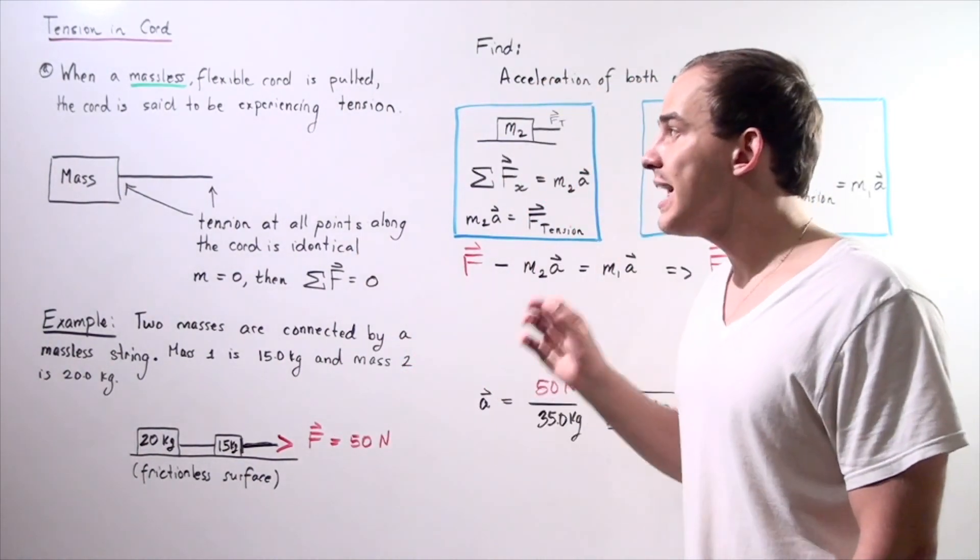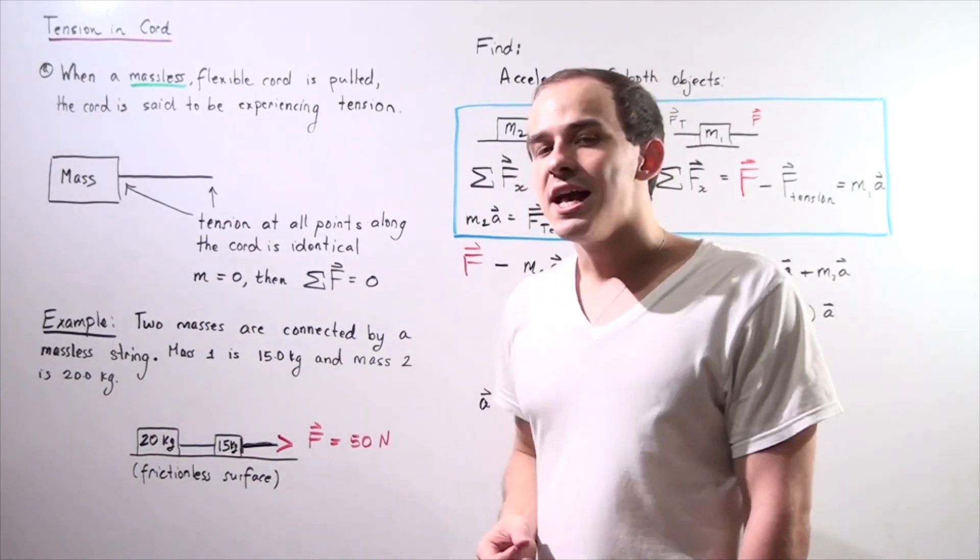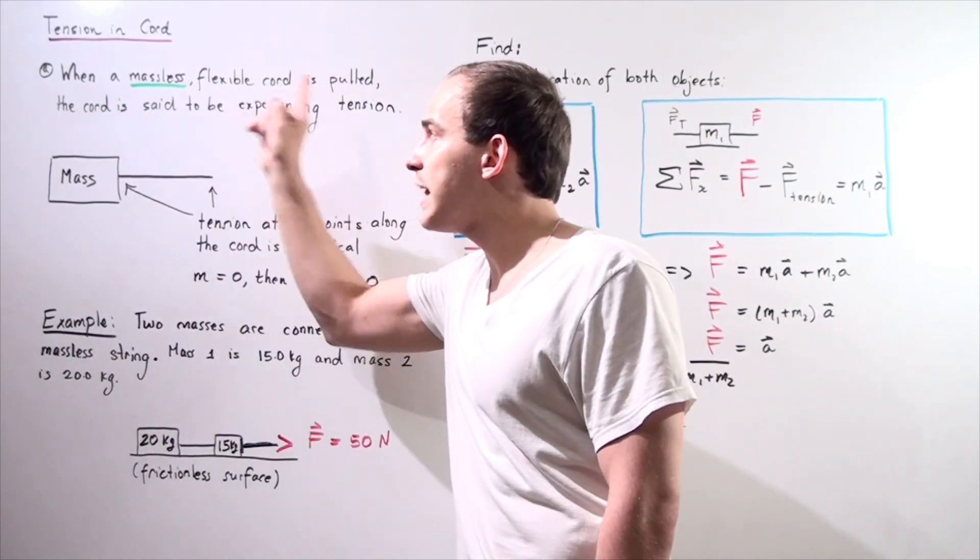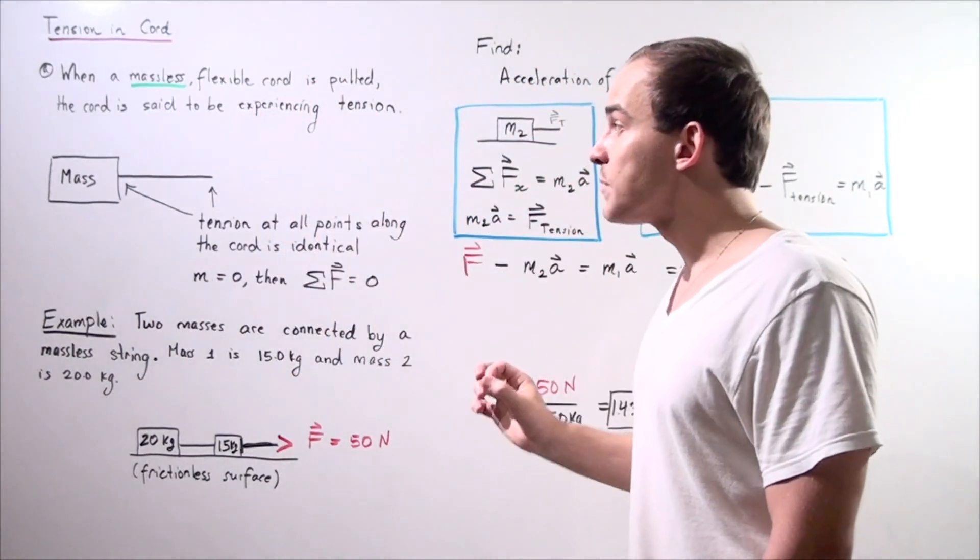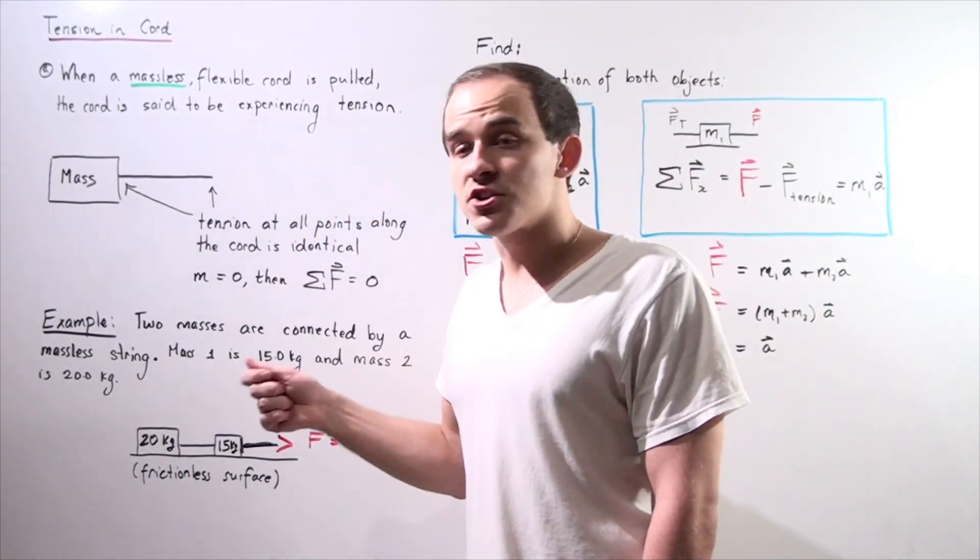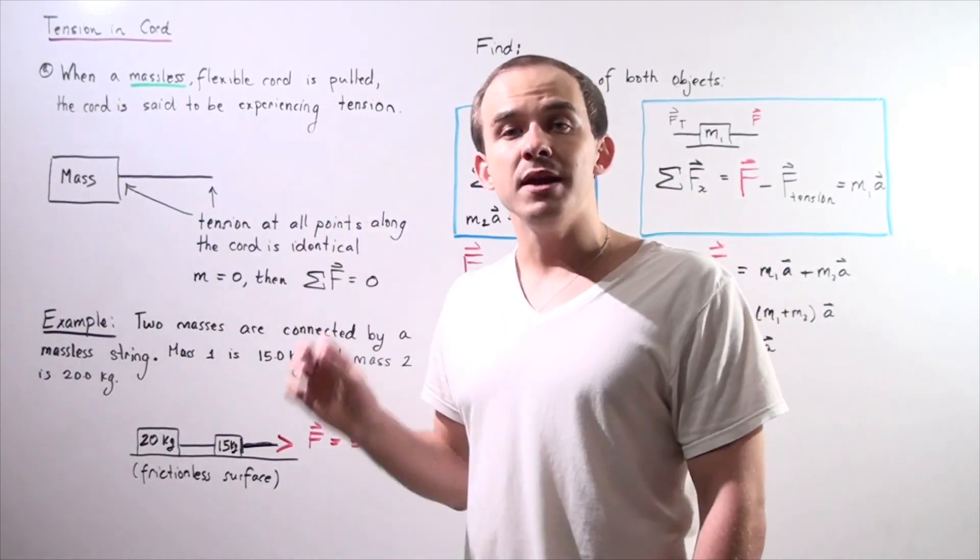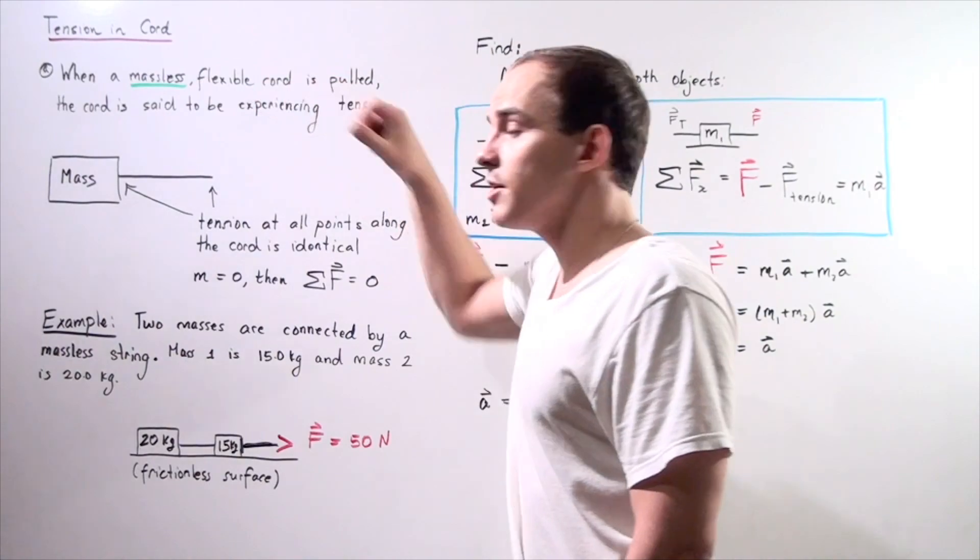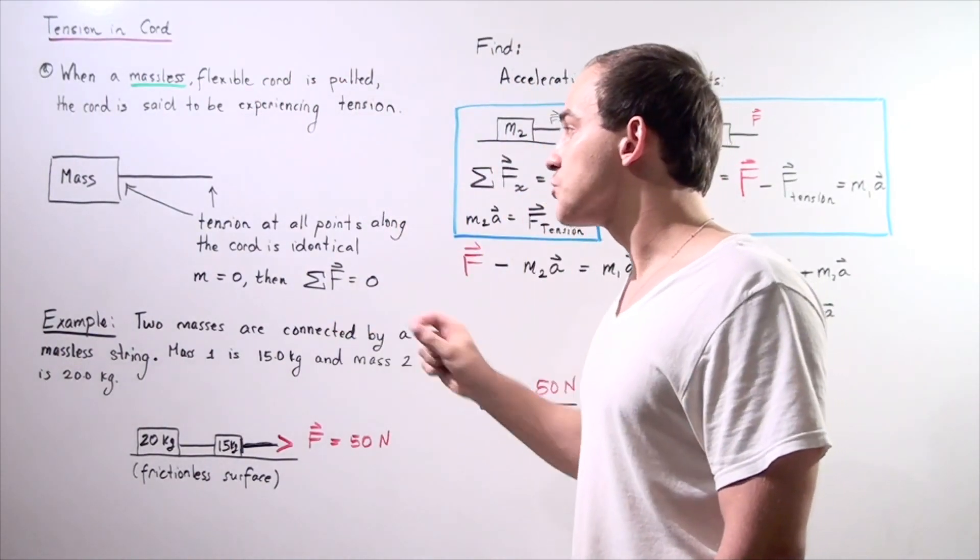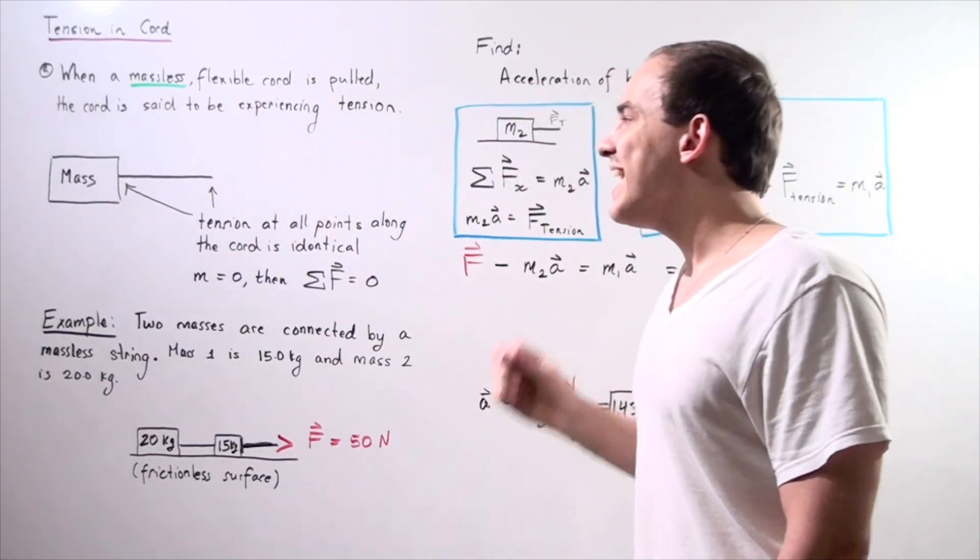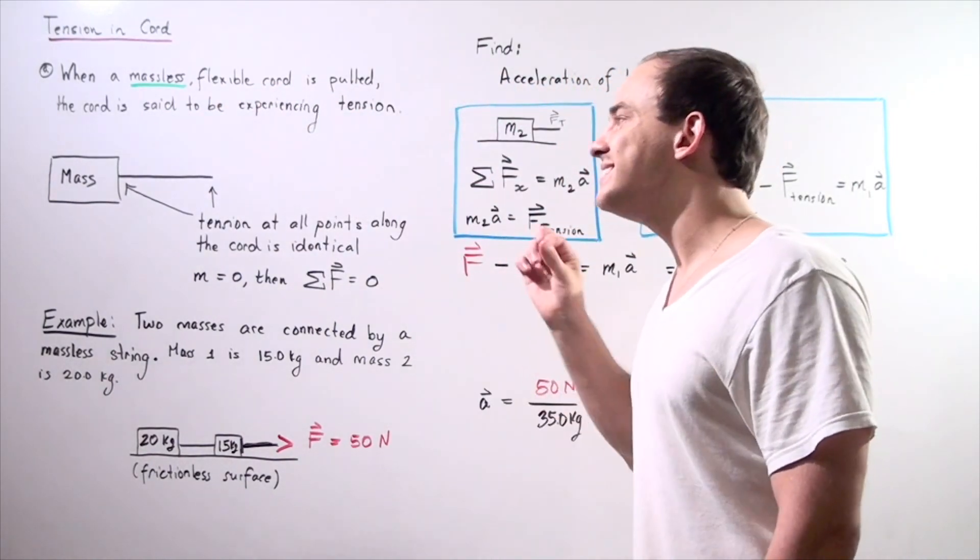That cord or string is under tension. The reason we make the assumption that we're dealing with a massless and flexible cord is so that our force with which we pull on the string remains undiminished throughout the entire string or cord. In other words, the tension at all points along this cord is exactly the same. It's identical.